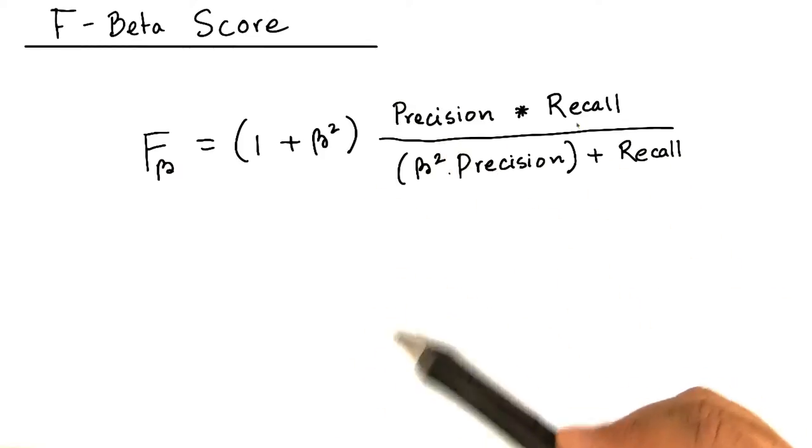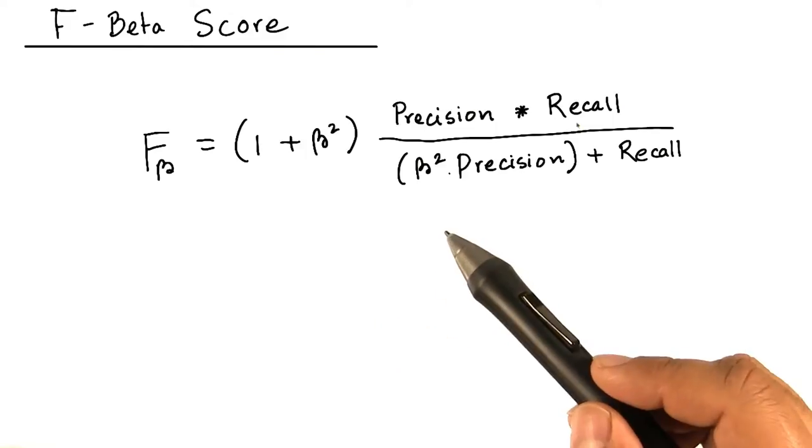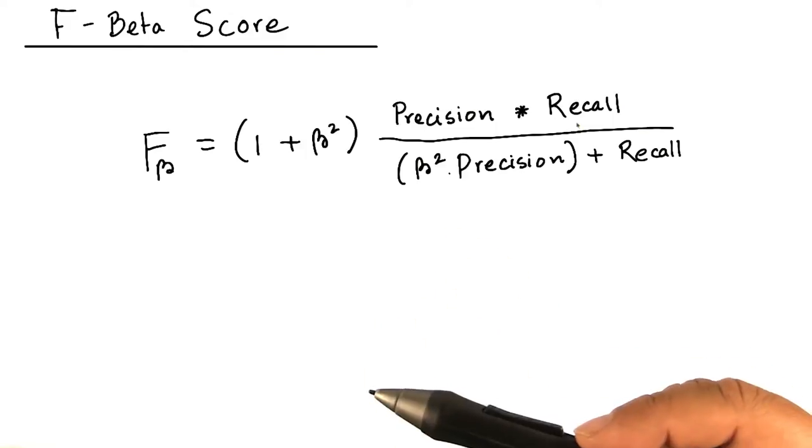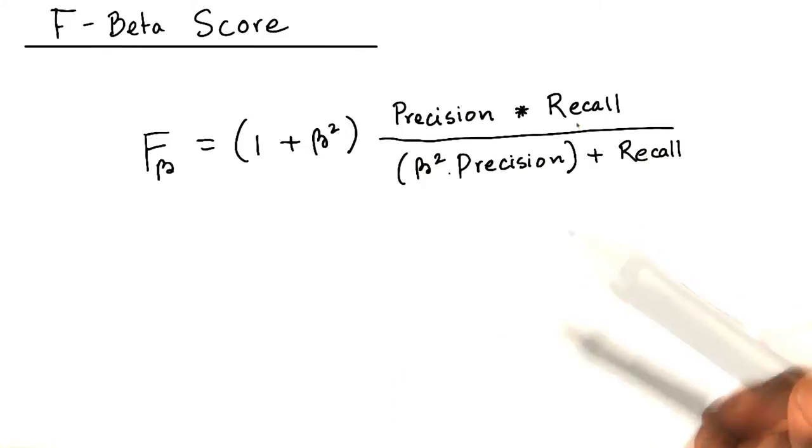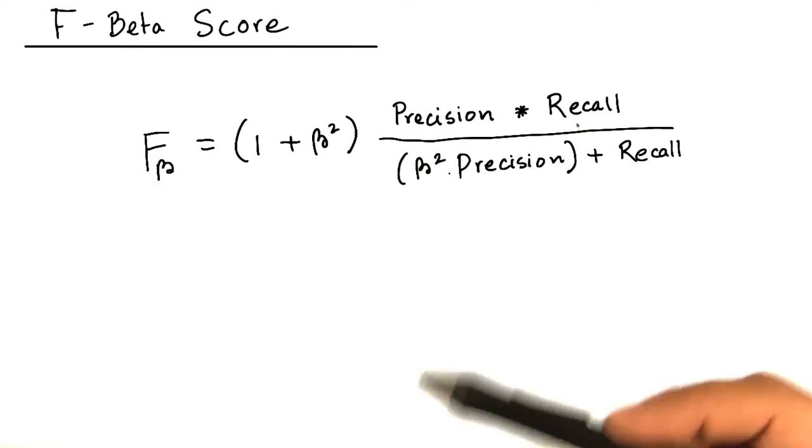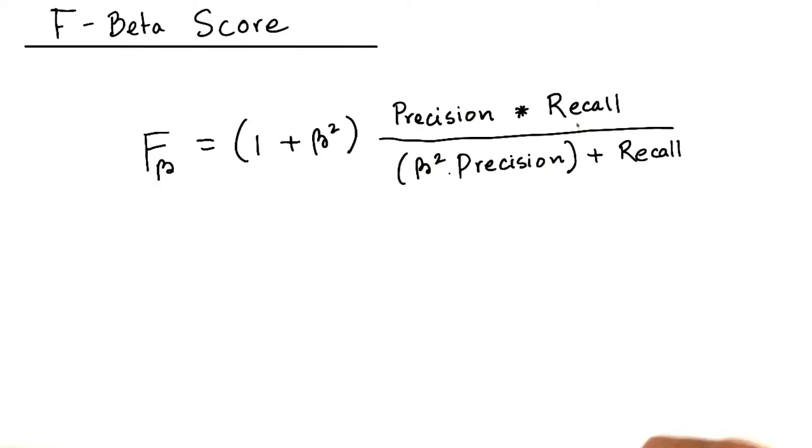Using a combination of precision and recall such as the F beta score can be very helpful because it gives you one number to maximize rather than two. If you're trying to decide between two different models and one has a higher precision but a lower recall, which will you choose?